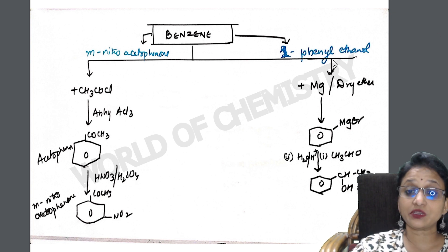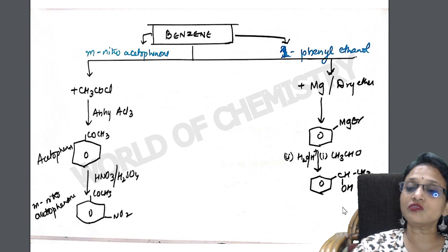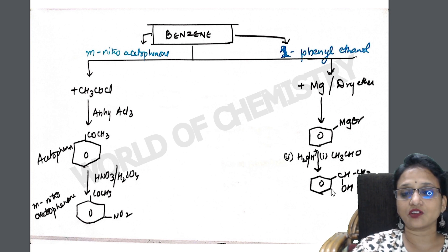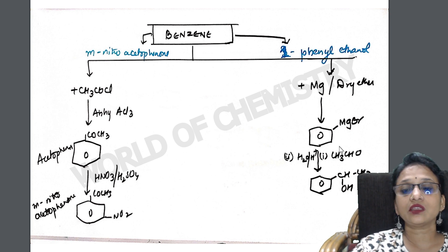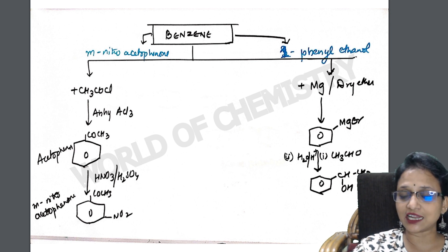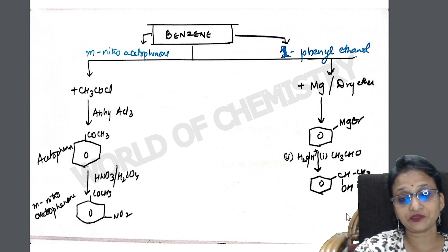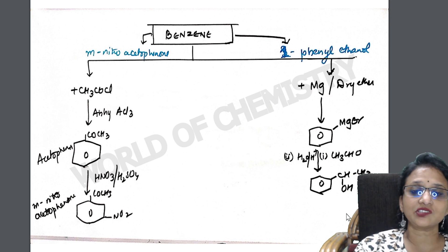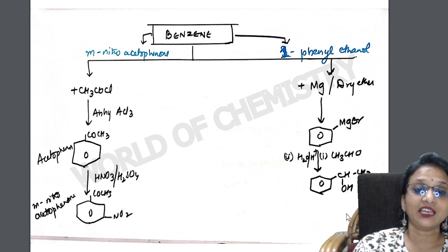For one phenylethan-1-ol, you need to introduce the phenyl ring along with an ethanol chain — it's a secondary alcohol. You need to increase the chain size, so introduce Grignard's reagent. Once you add Grignard's reagent you get an adduct. Then take acetaldehyde to introduce the aldehyde group, remove a water molecule, and in acidic medium you get one phenylethan-1-ol. Essentially hydrolysis removes the MgBr, and the aldehyde is converted to a secondary alcohol in acidic medium.